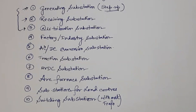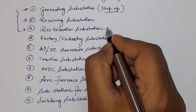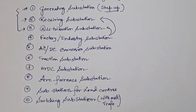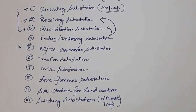Then there is the distribution substation. These three substations — generating, receiving, and distribution — are generally part of the transmission and distribution system, but receiving and distribution substations are also often used in industrial plant areas. Then there is the factory or industry substation, installed inside an industrial premises, which can also be categorized as a receiving or distribution substation.